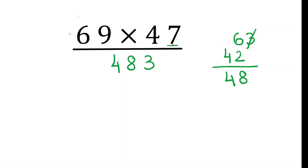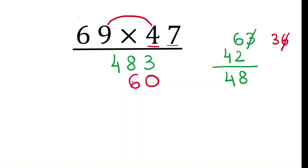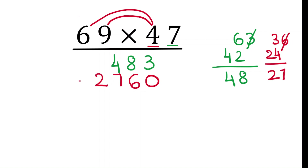Now moving to the tens digit 4. Since it is in the tens place, write 0 in the ones place of this row. Multiply 4 with the ones digit 9: 4 times 9 is 36. Write 6 in the answer and carry 3. Now multiply 4 with the tens digit 6: 4 times 6 is 24, plus carry 3 is 27. Write 27 in the answer.